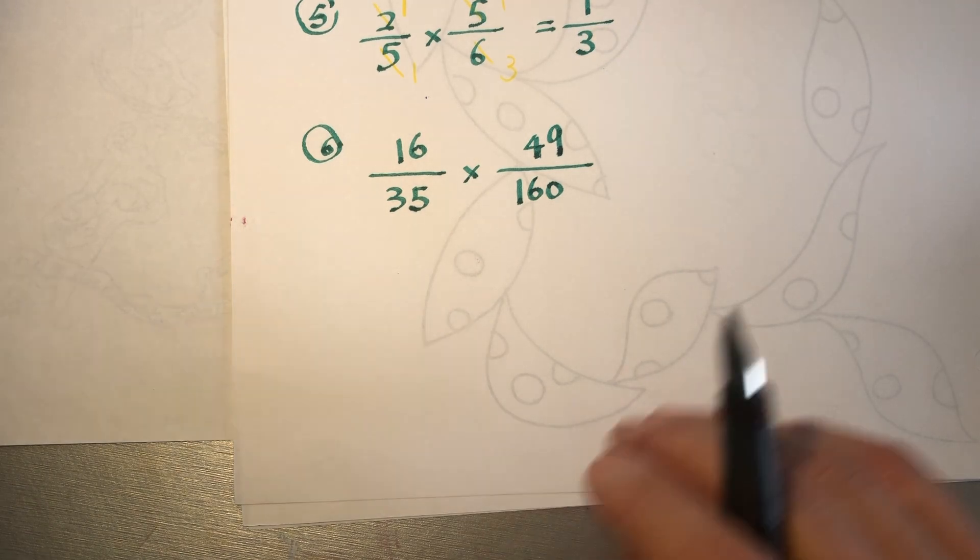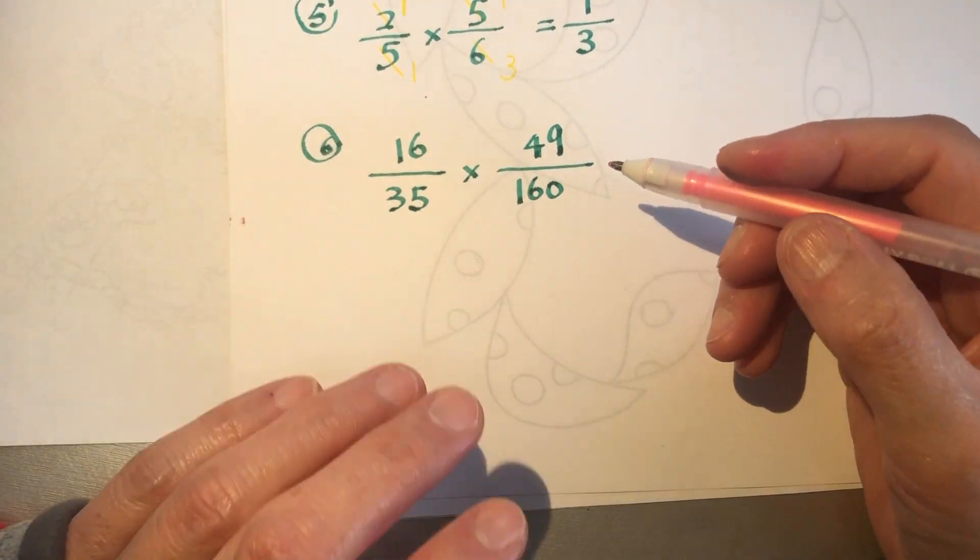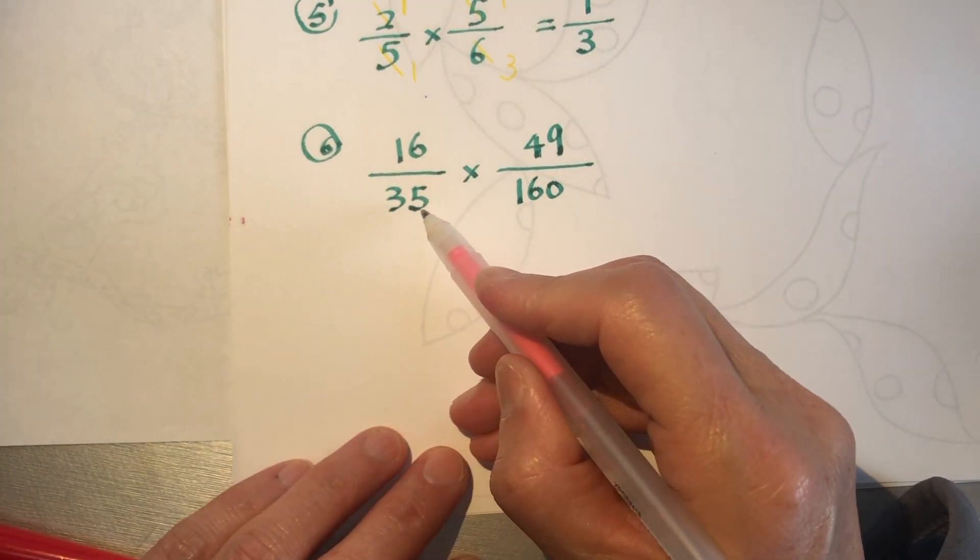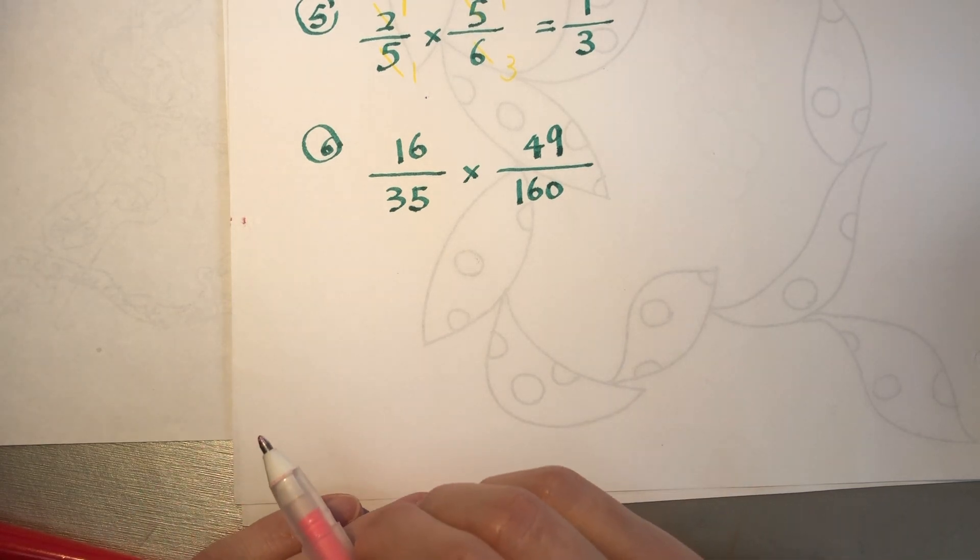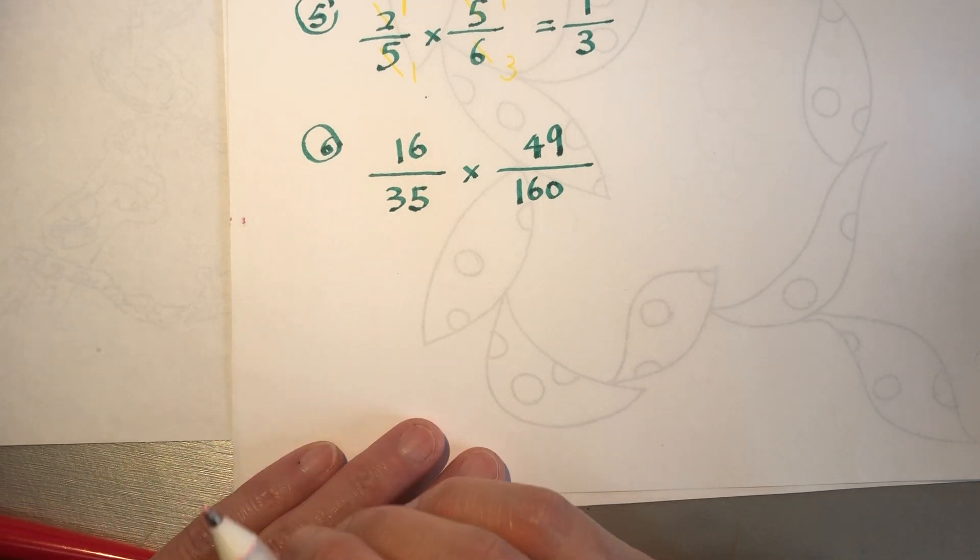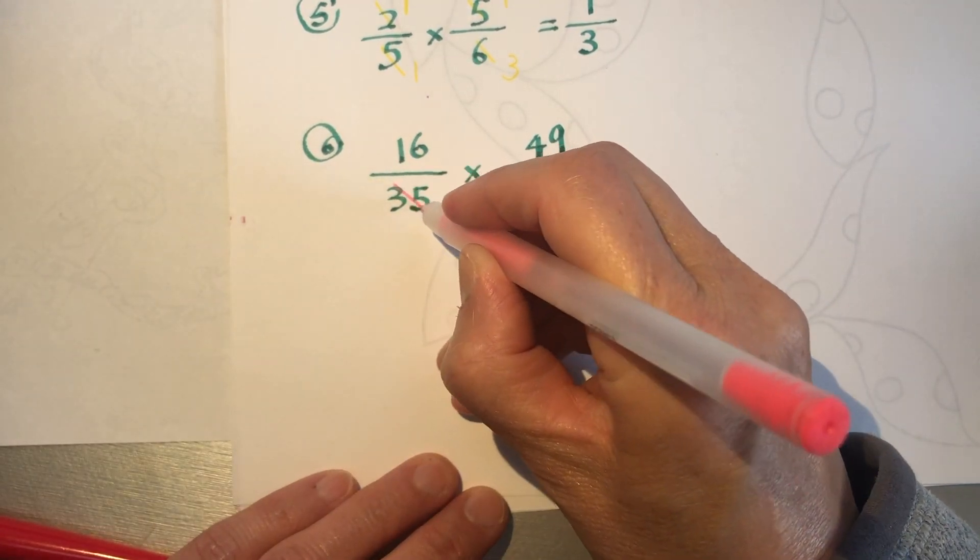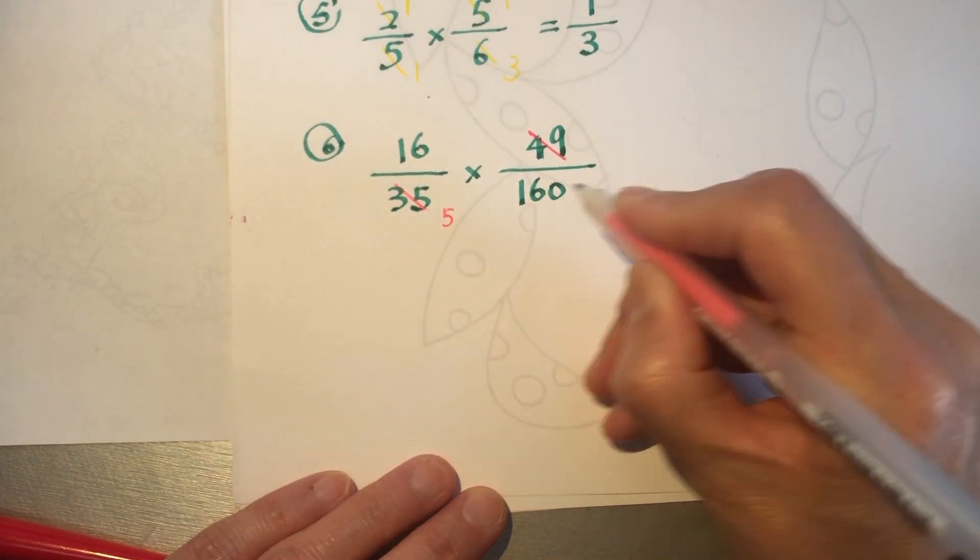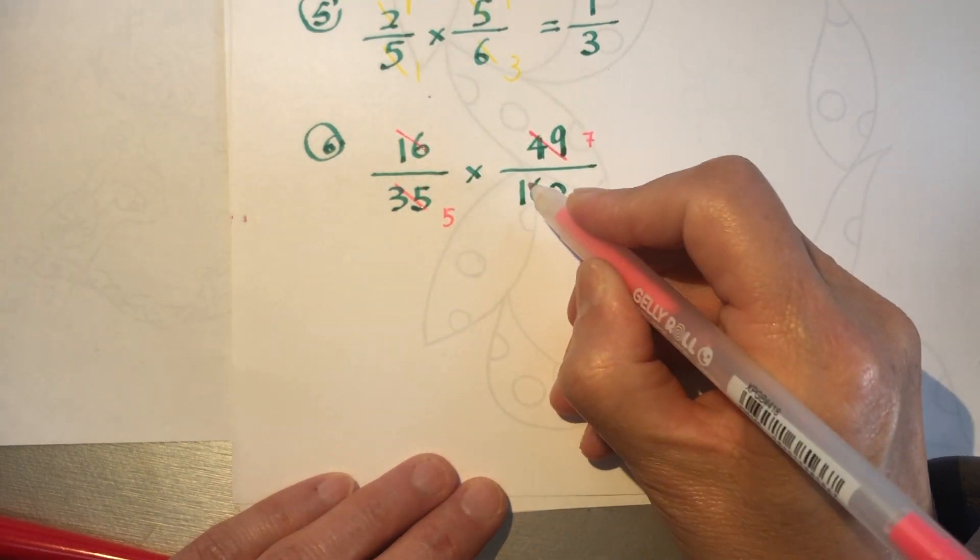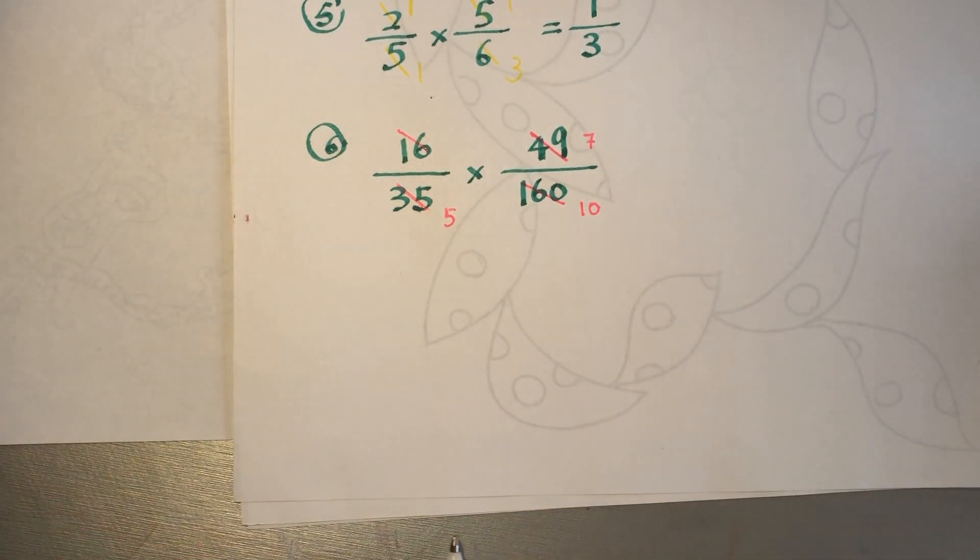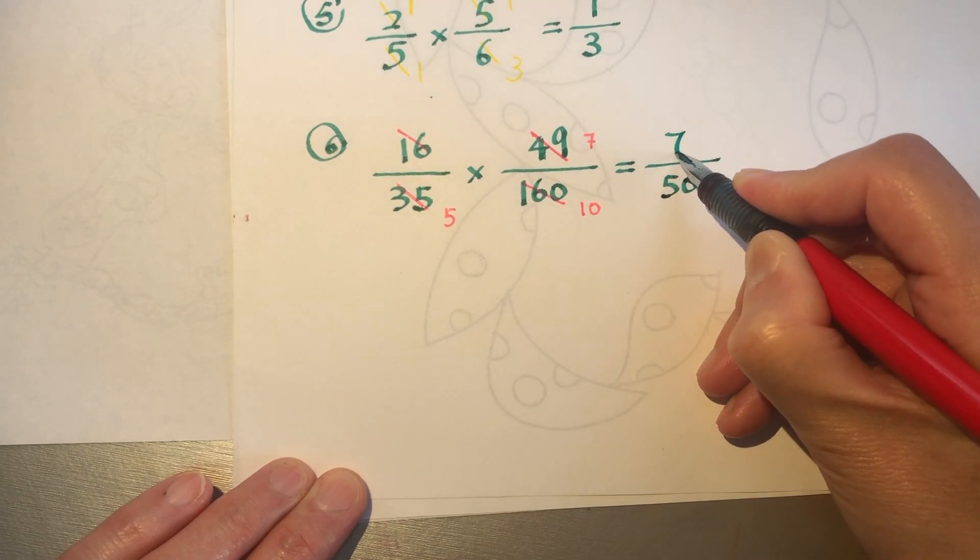So what do we see? First, if you know math, you first need to know that 35 and 49, they are both multiples of 7. And timetable is the most important thing in arithmetic. So you have to know this by heart. Both divided by 7: 5, 7. And 16 and 160, both divided by 16 becomes 10. So the result is 7 over 50.